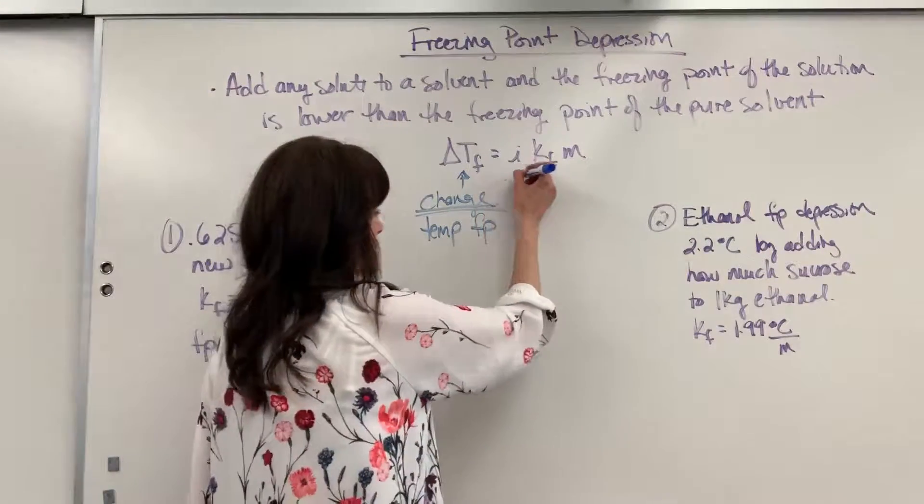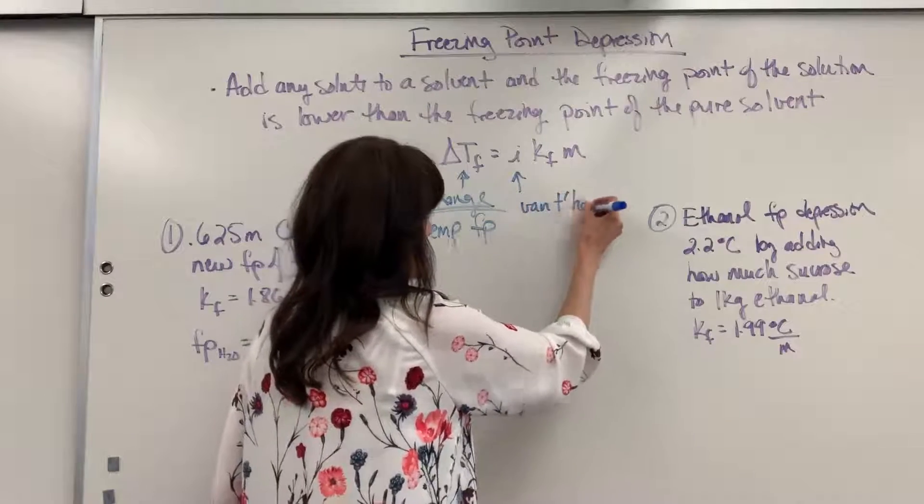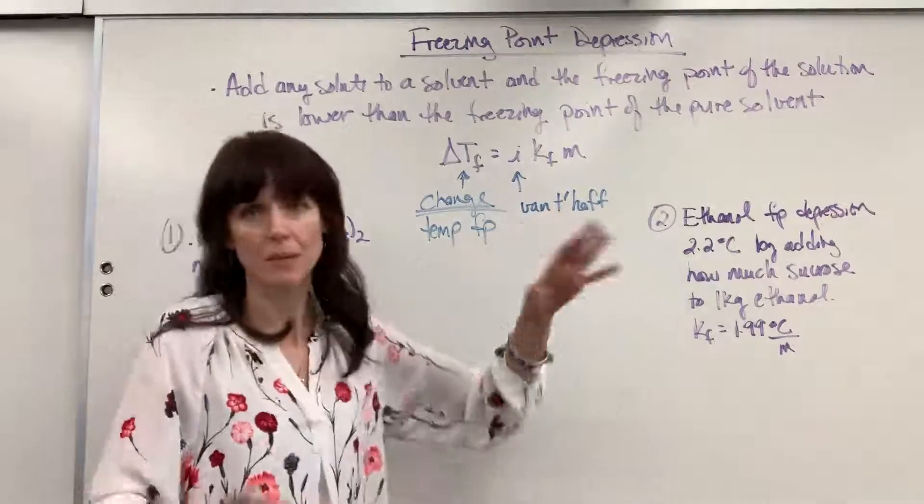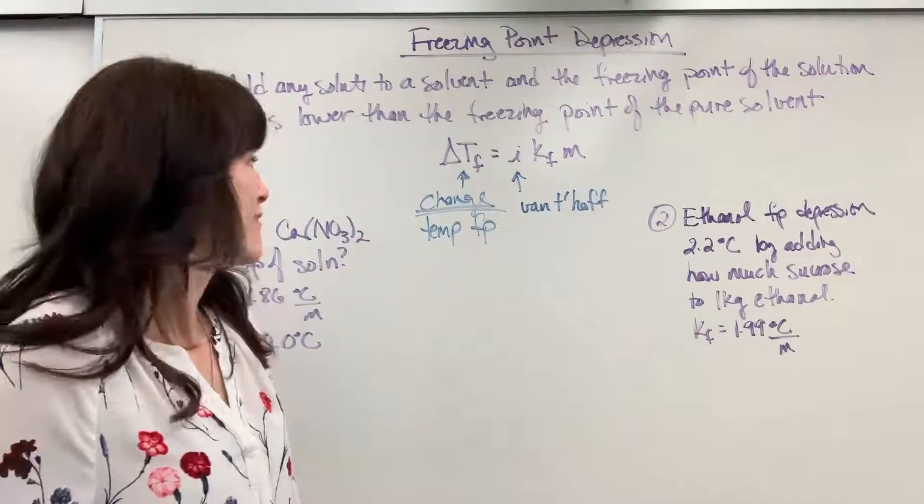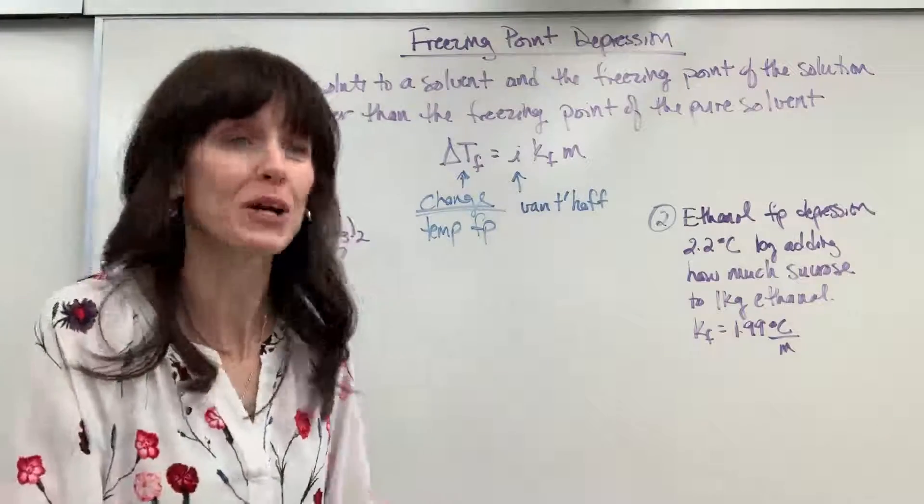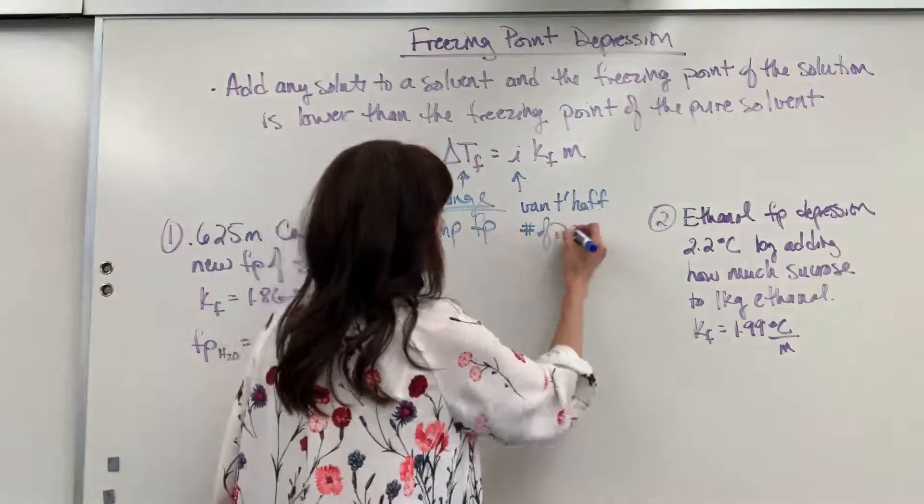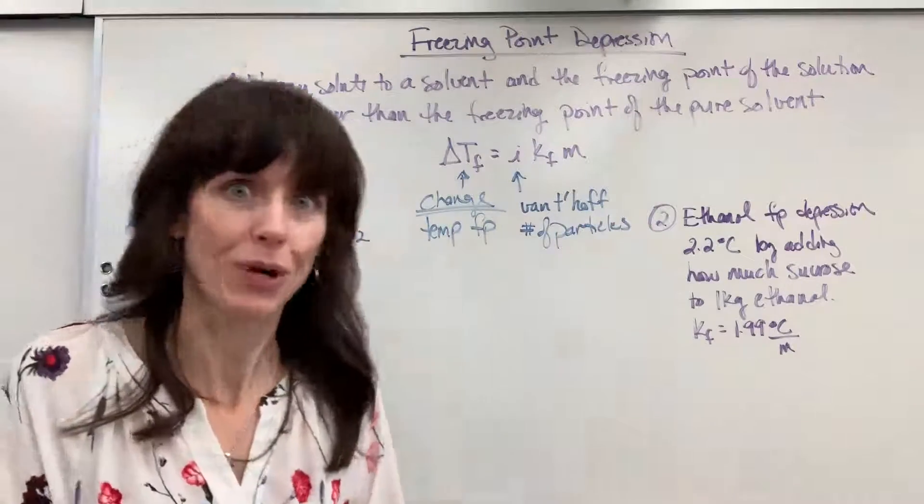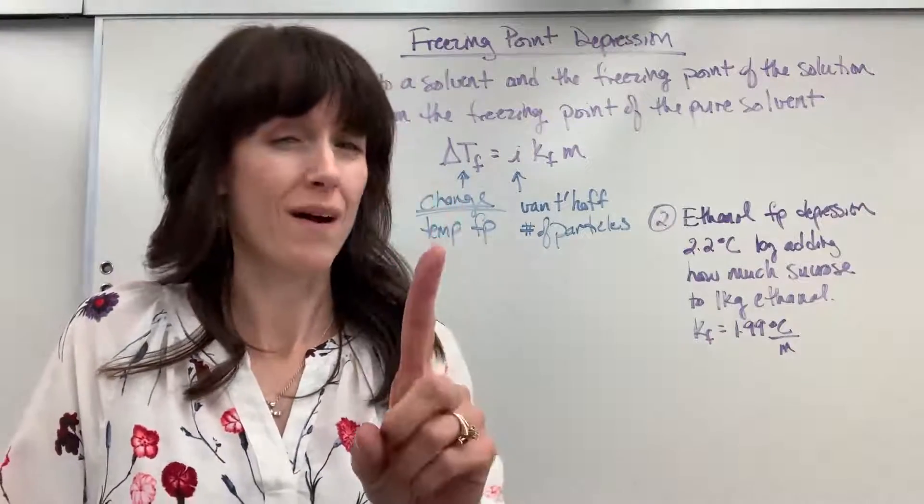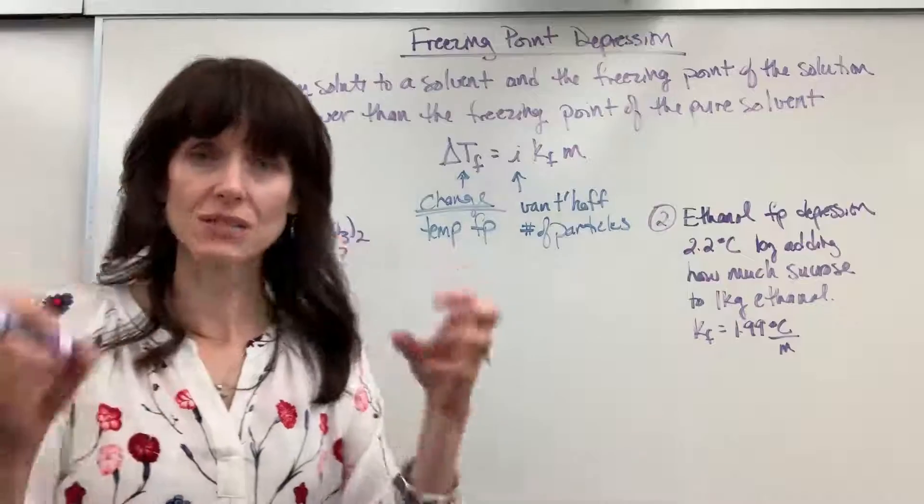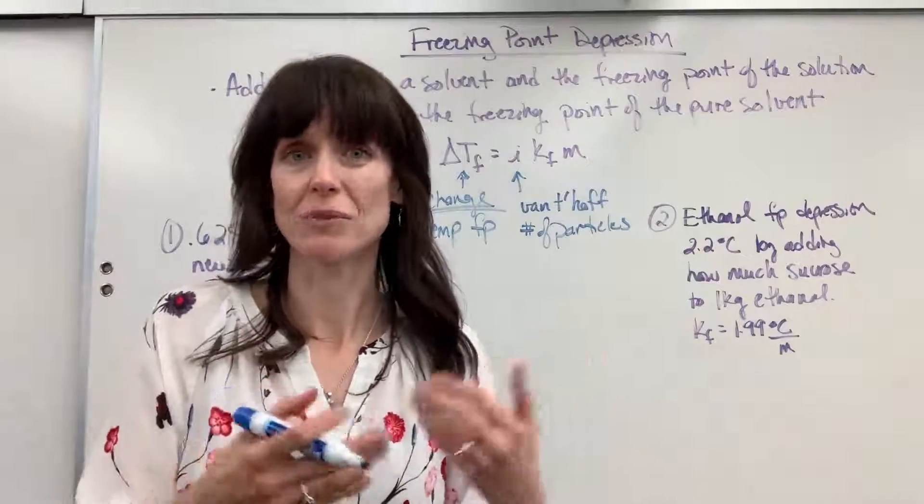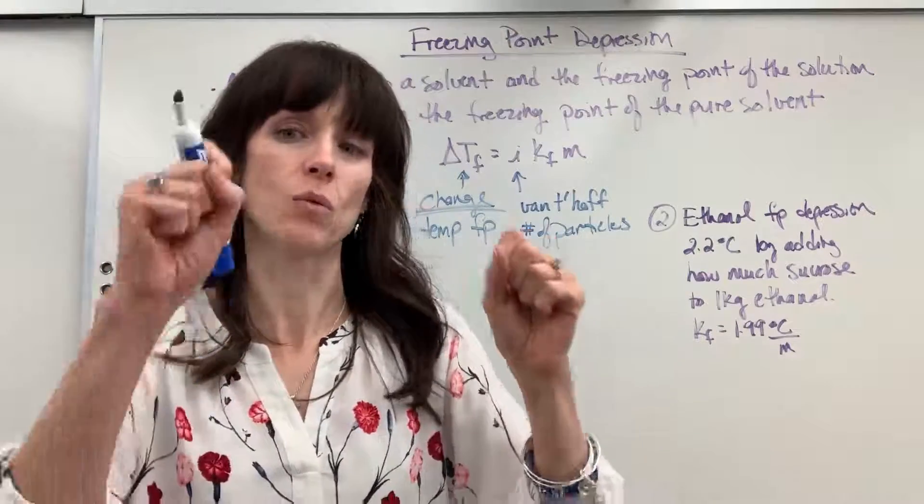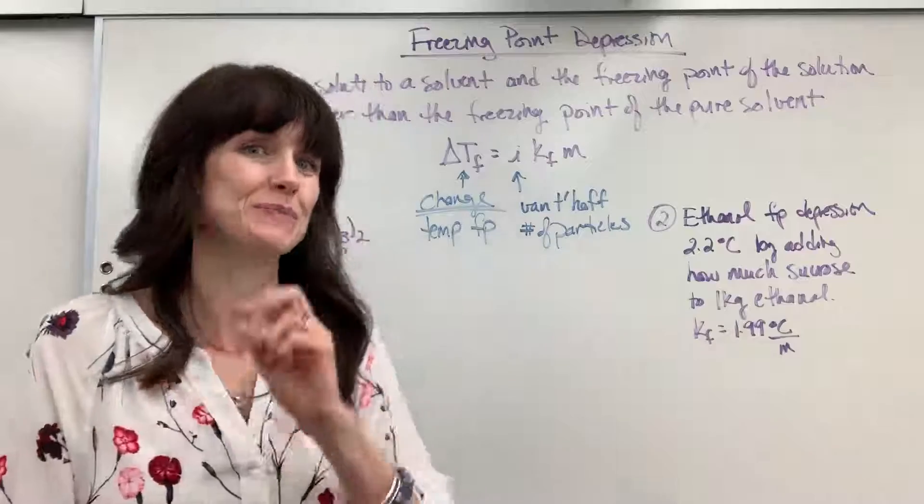Now I, this is kind of a funny term, is van't Hoff factor. Really what that is, is just the number of particles. Now a little reminder, anything that's a non-electrolyte, like glucose, sucrose, that is going to be one. Ionic compounds though, we have to dissociate those into their ions if they're being dissolved into water. And that will give us our I. So sodium chloride, we'll break into sodium and chloride, that would be one, two. The particles, the I would be two.